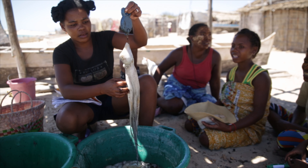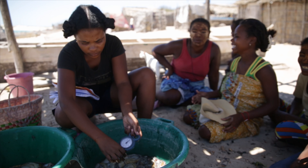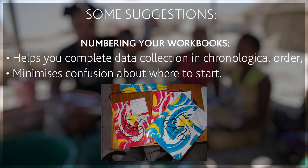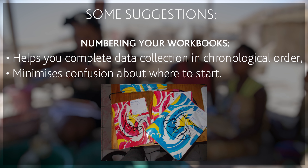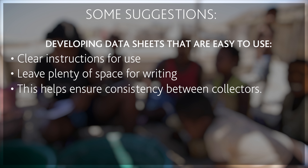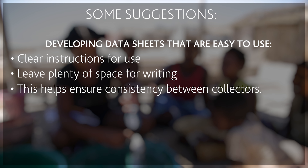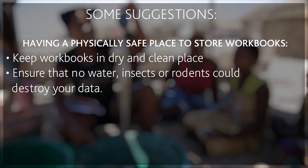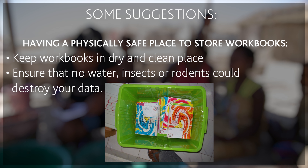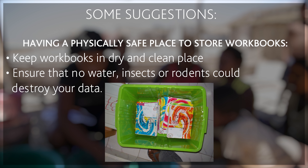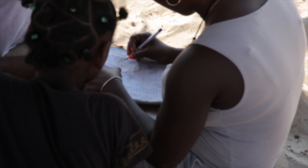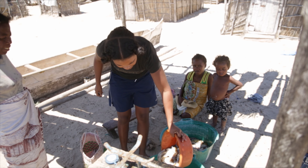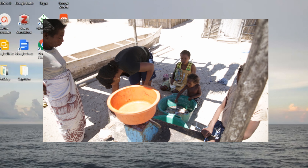You will also need to think about the best ways you can protect and preserve your data. Some suggestions include: numbering your workbooks, so you complete data in chronological order and don't get confused about where data is to be recorded when you start a new day — this also makes it easier to find at a later stage. Developing a data collection sheet with clear instructions, so your collectors can use the sheets in the field easily and write on them clearly, also ensuring that the way data is recorded is consistent between collectors. Having a physically safe place to store your numbered and completed workbooks, such as a plastic box or filing cabinet — make sure workbooks are kept dry and away from any insects or rodents that could potentially destroy your precious data. If your data collectors ensure data is recorded clearly and physical workbooks are kept in a clean and safe environment, they will have laid good foundations for preserving data that took a great deal of time and effort to collect.